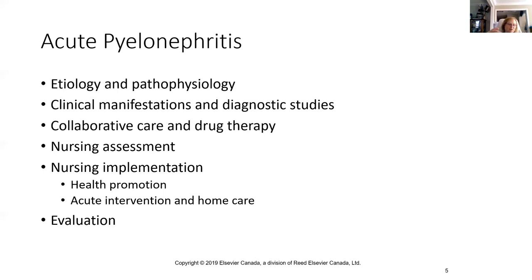Additional symptoms include vomiting and severe flank pain on the affected side, along with costovertebral angle tenderness on palpation. Interestingly, even if pyelonephritis is not treated, acute symptoms can subside within a few days — but the bacteriuria and pyuria persist, the infection continues, and white blood cells remain in the urine. The renal parenchyma can be involved, so even if symptoms have resolved, a complete workup must be undertaken to ensure the infection is fully treated.